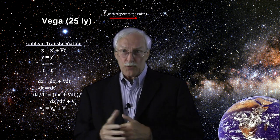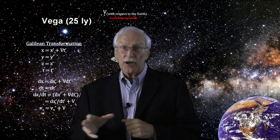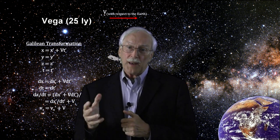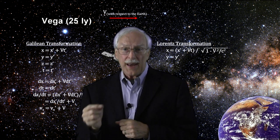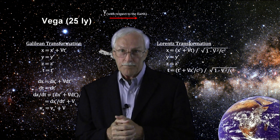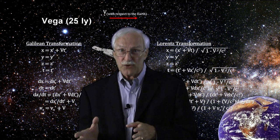In the years following Michelson-Morley's experiment, a number of physicists and mathematicians went to work on this problem. People like George Fitzgerald, Henry Poincaré, and Hendrik Lorentz. They came up with these transformations, now called the Lorentz Transformations.